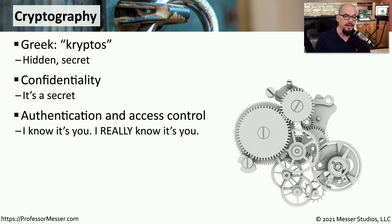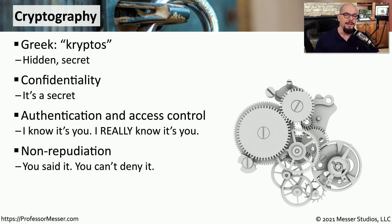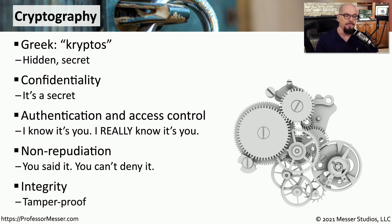We can also provide authentication and access control so that we can verify a person who might be logging into a system is really that person. And we can provide non-repudiation, which means if someone sends us information, we can verify that they were really the person who provided us with that information. Cryptography also provides us with a way to verify integrity — if we download a file or an email, we can verify that it was never changed from the time it was originally sent.